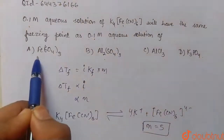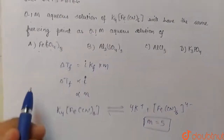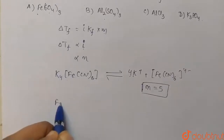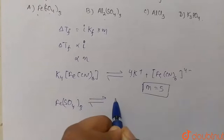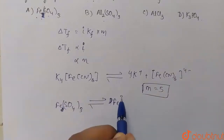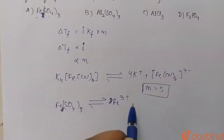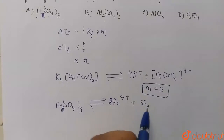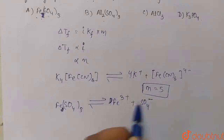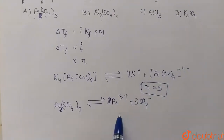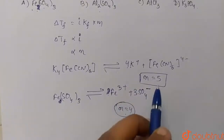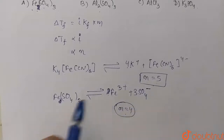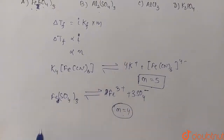Option A: Fe₂(SO₄)₃ dissociates into Fe³⁺ and 3 SO₄²⁻ ions. That gives n equals 4, which is not equal to 5, so this is not our answer.